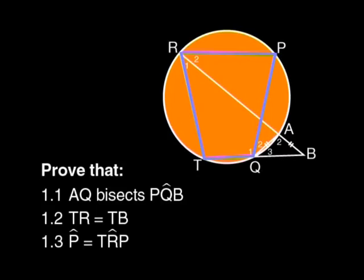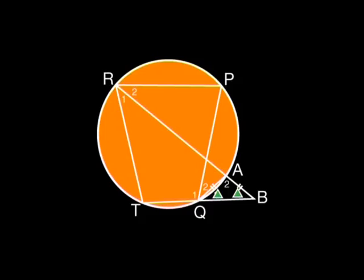Have a good look at the diagram and the given information. You should notice a few things immediately that will be useful. PRTQ is a cyclic quadrilateral. RAQT is also a cyclic quadrilateral. RA bisects angle R means that angle R1 equals angle R2. AB equals AQ is marked already and should make you think of an isosceles triangle, with equal base angles at Q3 and B.